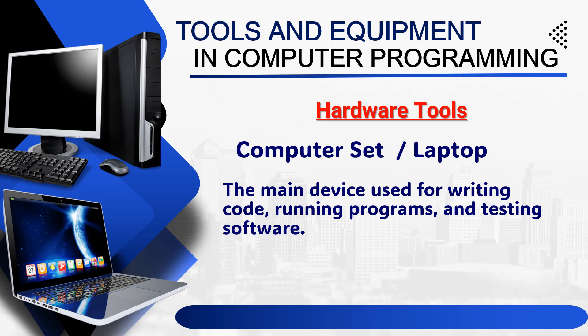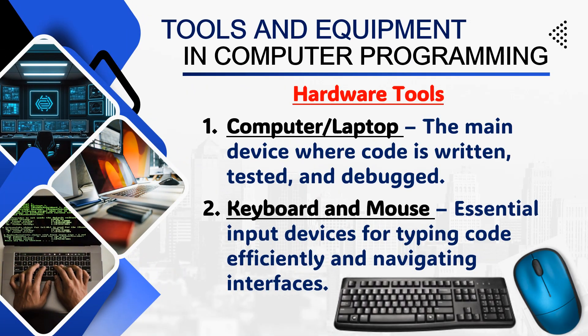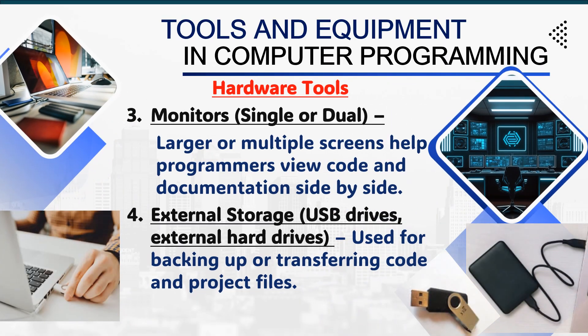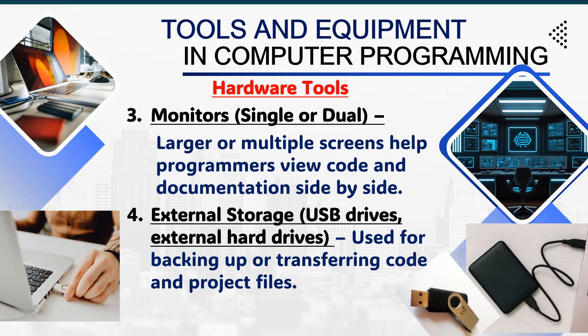The main device used for writing code, running programs, and testing software is the computer or laptop. The following are the hardware tools used in computer programming: Computer or laptop — the main device where code is written, tested, and debugged. Keyboard and mouse — essential input devices for typing code efficiently and navigating interfaces. Monitors, single or dual — larger or multiple screens help programmers view code and documentation side-by-side. External storage such as USB drives and external hard drives are used for backing up or transferring code and project files.